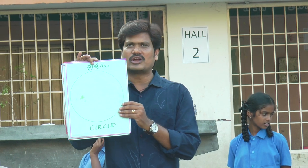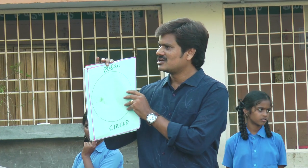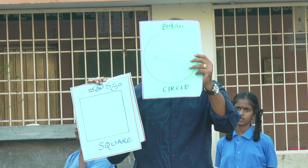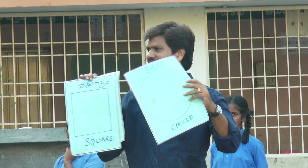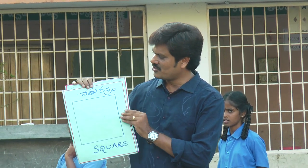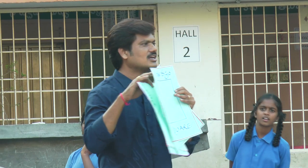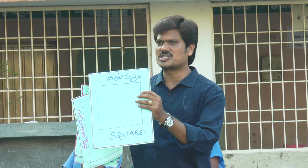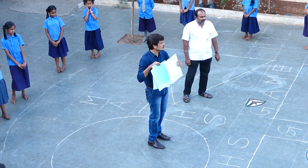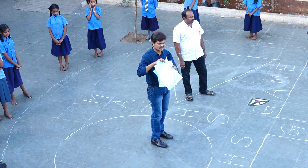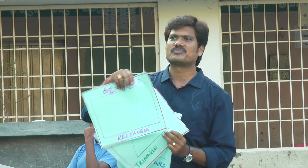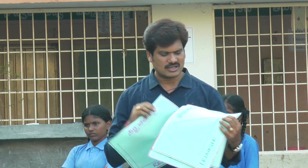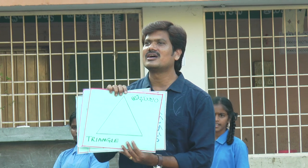Children, look at these flashcards. What is this? Circle. What is this? Square. In Telugu we call it 'Chotrashram,' in English it is square. What is this? Rectangle. What is it? Rectangle. Here? Triangle.